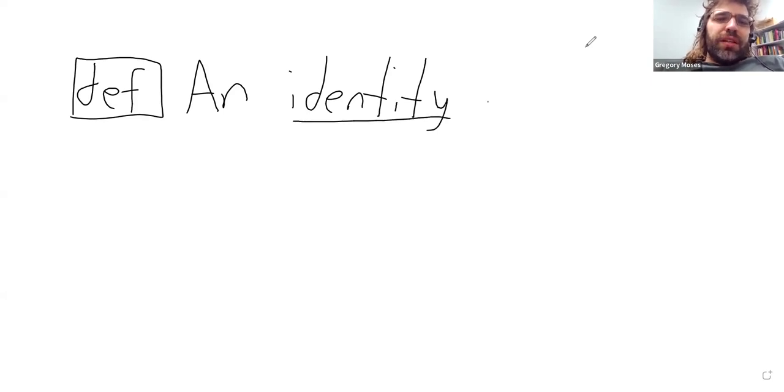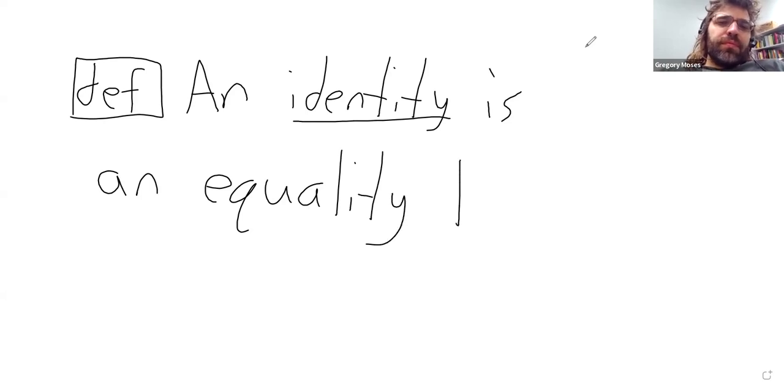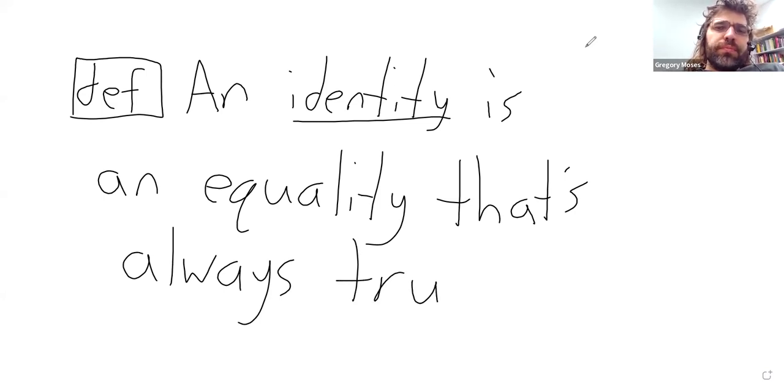Definition. An identity is an equality that's always true. Fairly sure I've put this definition up before, but this is as good a time as any to remind ourselves of it. So some equalities are always true, other equalities are not.